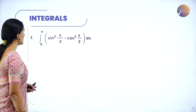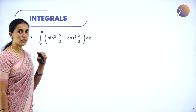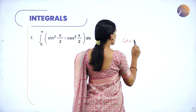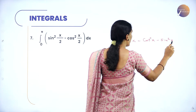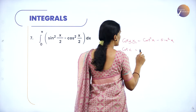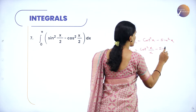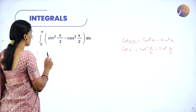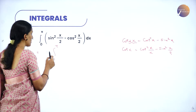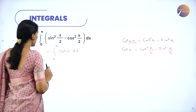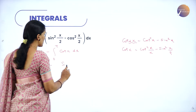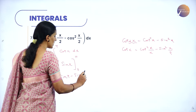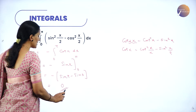Problem 7: Integral from 0 to π of (sin²(x/2) − cos²(x/2)) dx. Using the half-angle formula, cos(x) = cos²(x/2) − sin²(x/2), so sin²(x/2) − cos²(x/2) = −cos(x). The integral becomes ∫₀^π −cos(x) dx = −[sin(x)]₀^π = −(sin π − sin 0) = −(0 − 0) = 0.